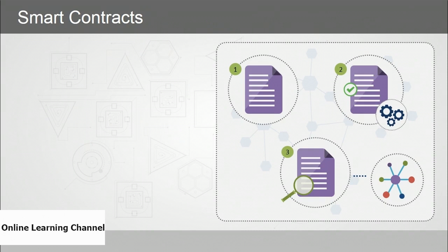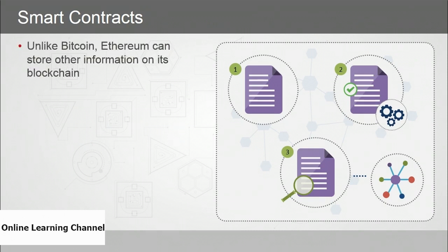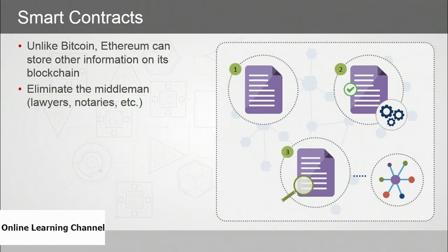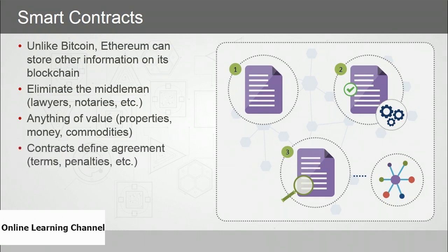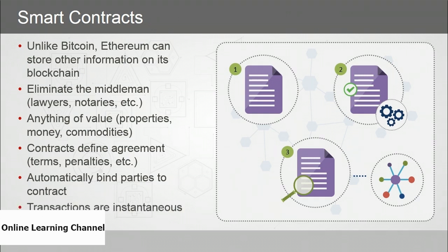Smart contracts: unlike Bitcoin, Ethereum can store other information on its blockchain. Smart contracts are used in part to eliminate the middleman — lawyers, notaries — and can store anything of value: properties, money, commodities, equities. The contracts define the agreement — terms and penalties are baked right into the smart contract on the blockchain — it automatically binds parties to the contract, and transactions are instantaneous.